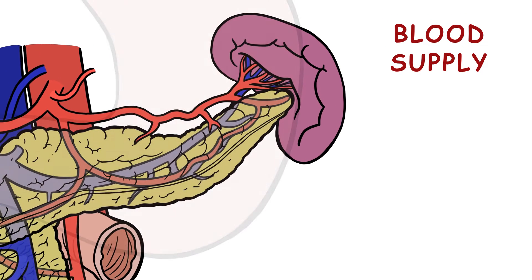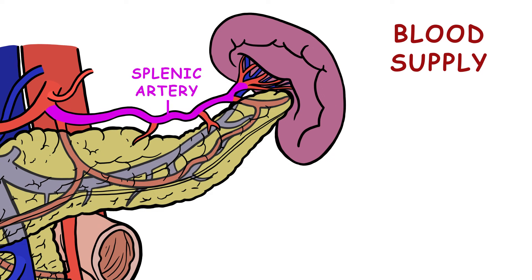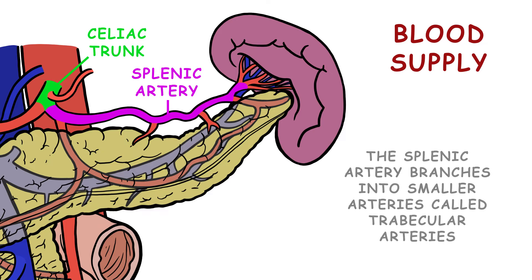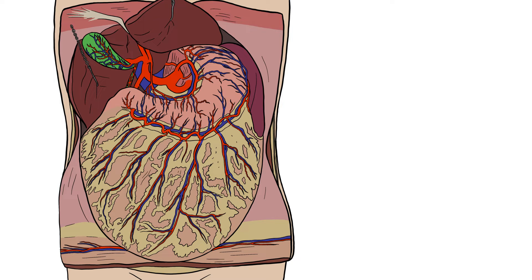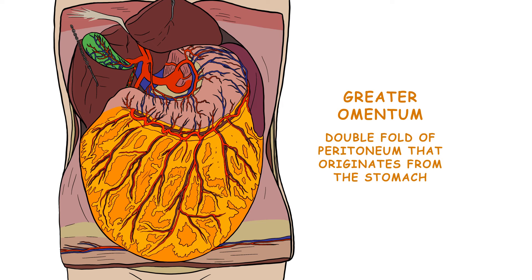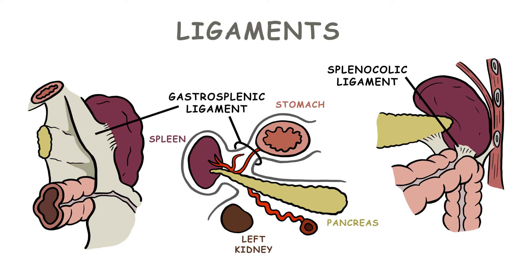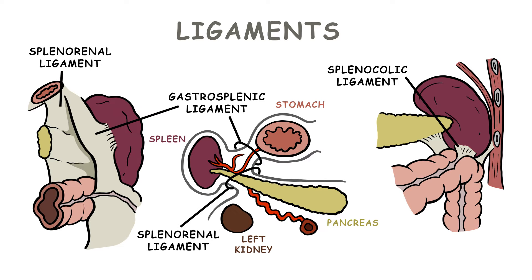The spleen's primary blood supply is from the splenic artery, which originates from the celiac trunk. The splenic artery branches into smaller vessels called trabecular arteries. The spleen connects to the stomach and left kidney by parts of the greater omentum, which is a double fold of peritoneum that originates from the stomach. The gastrosplenic ligament connects the hilum with the stomach's greater curvature, and the splenorenal ligament connects the hilum with the left kidney. The splenic vessels and the tail of the pancreas are within the splenorenal ligament.